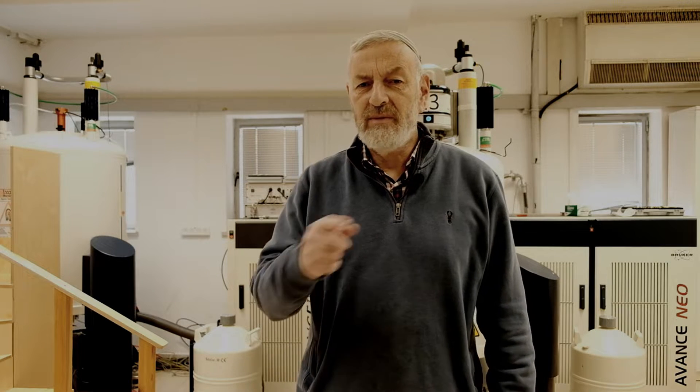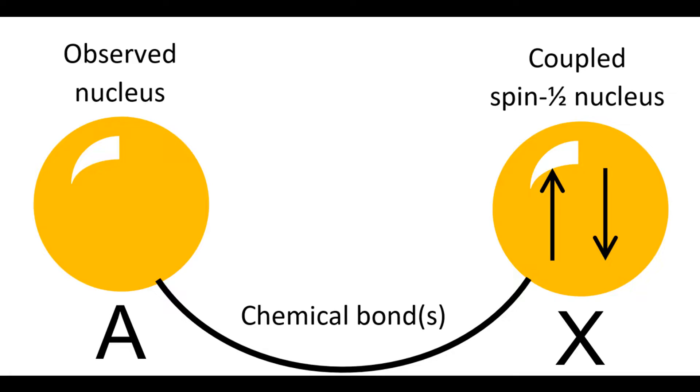For the time being, I will discuss spin half nuclei and mostly between protons. The spin orientation of neighboring nuclei affects the effective magnetic field at a nucleus. There are two spin orientations for spin half nuclei.